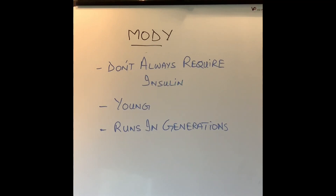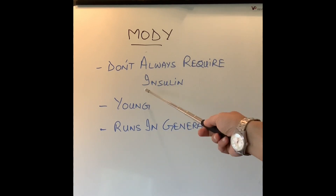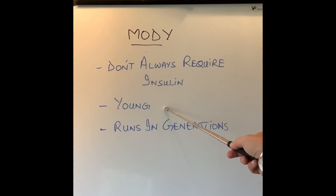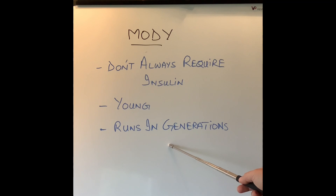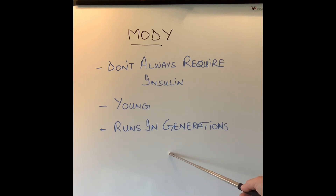Just to recap quickly the differences between type 1, type 2 diabetes, and MODY: MODY doesn't always require insulin, it happens in young people under the age of 25, and it runs in generations. So one of the grandparents might have MODY, then one of the parents might have MODY, and then a couple of siblings might have MODY.